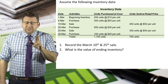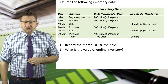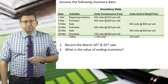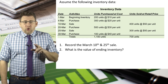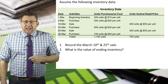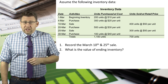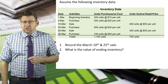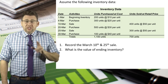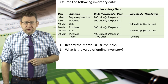If you want to pause the video at this point and write down those numbers, I would encourage you to do that. So with this data and using FIFO, let's record the March 10 and 25 sales as well as determine the value of ending inventory, assuming this is a perpetual inventory tracker.